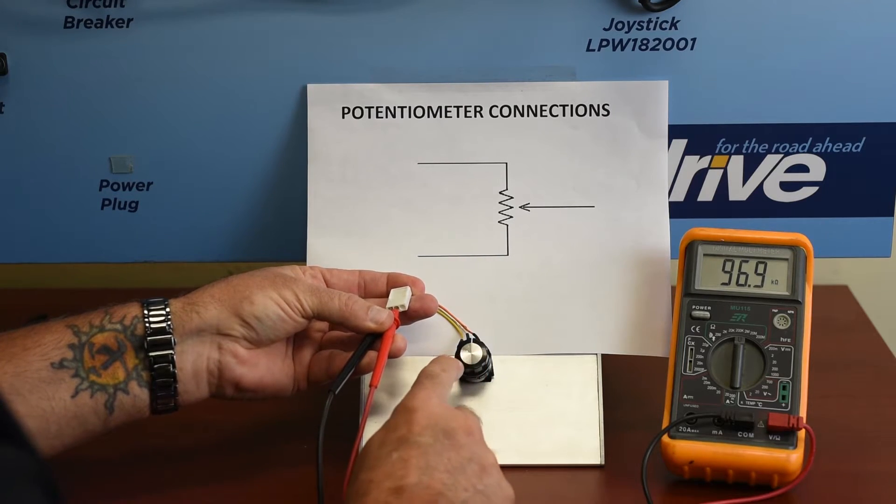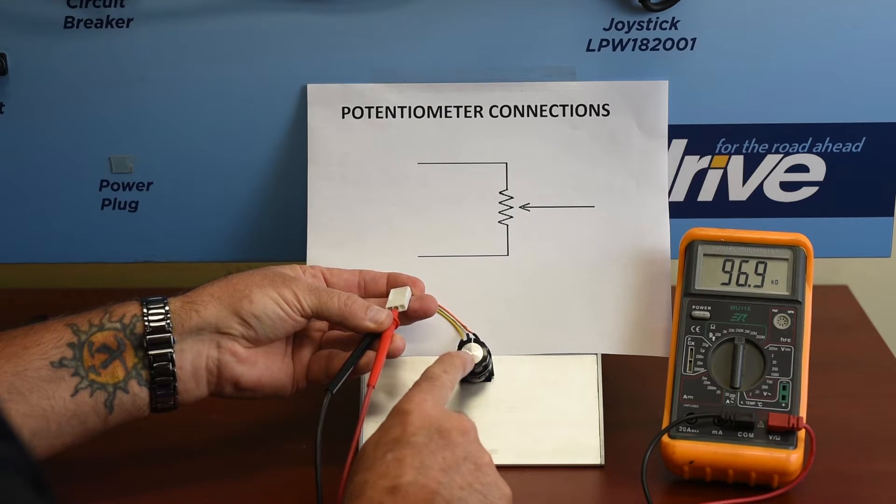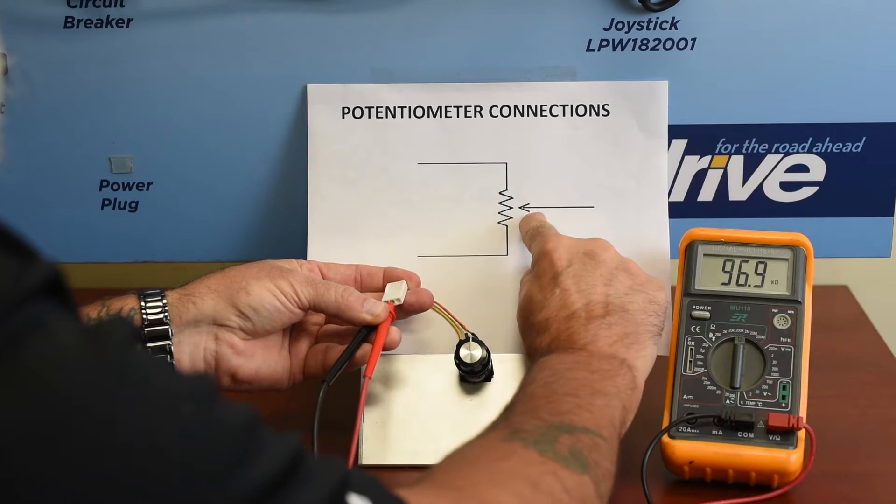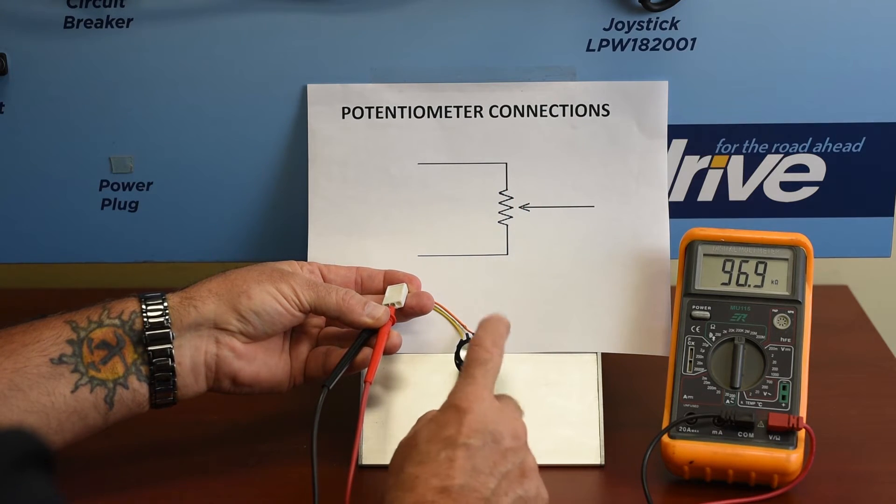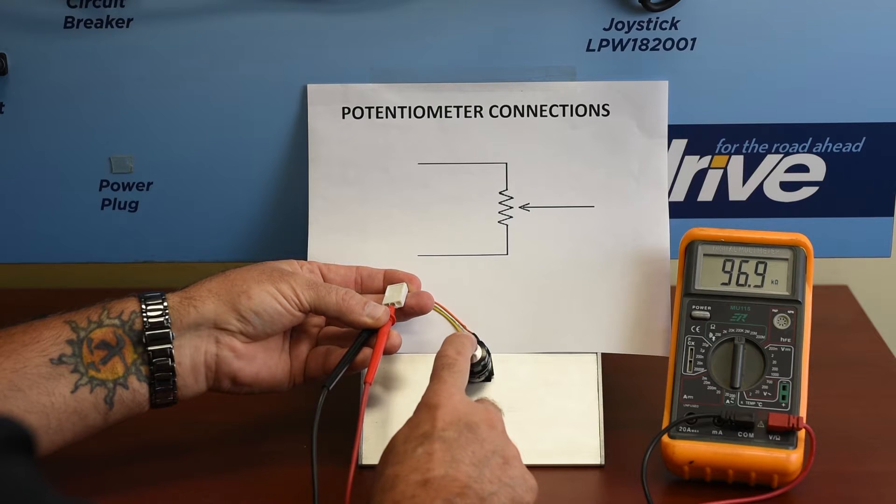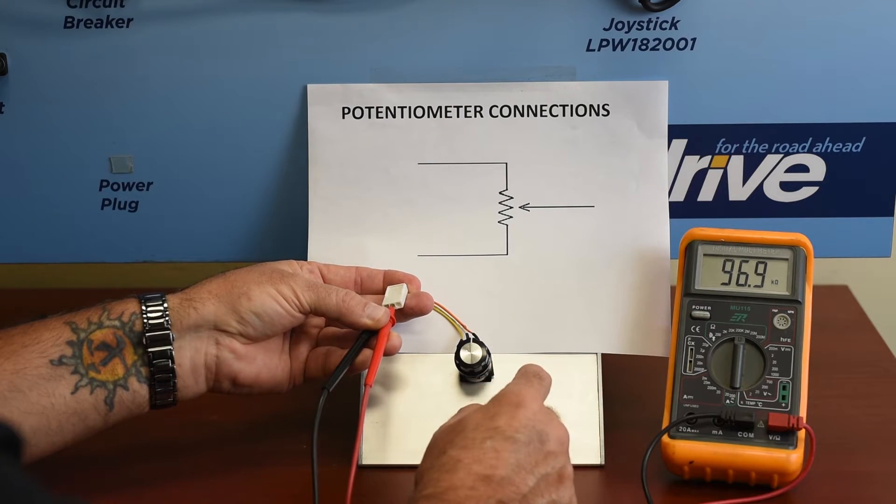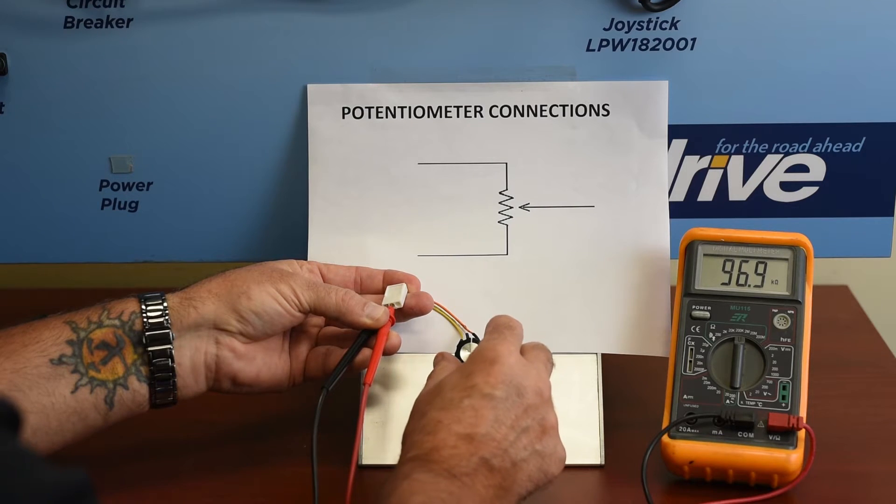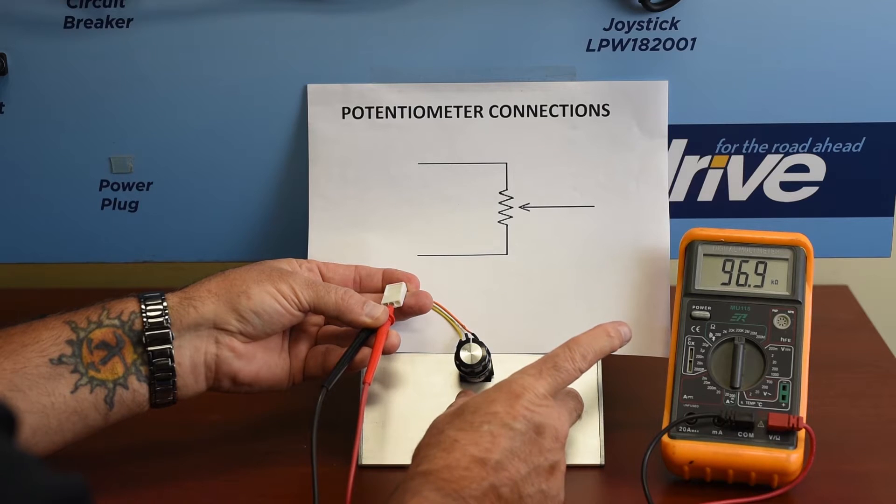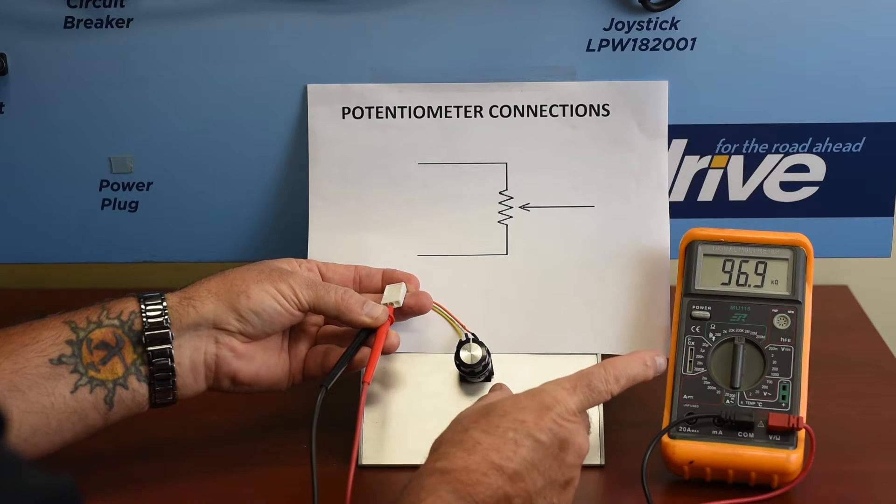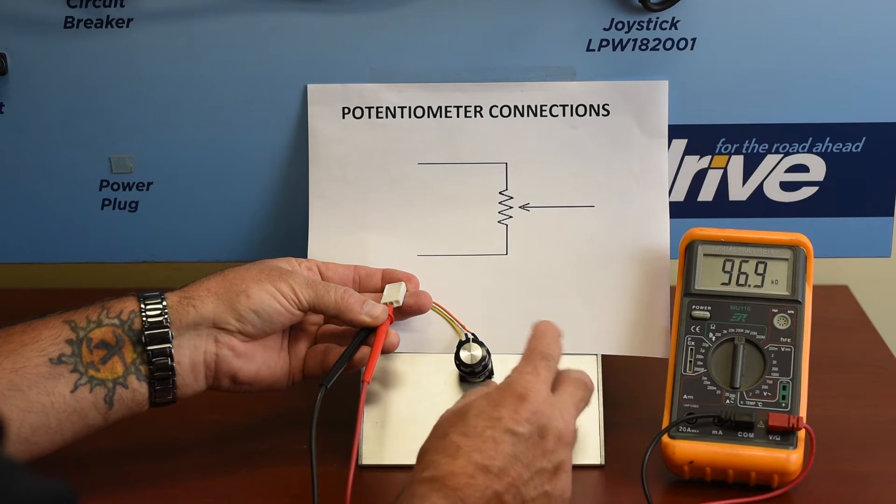And now what we're going to do is slowly turn the knob on the pot and move the wiper in both directions to make sure that it swings smoothly. Normally, the resistance in this case is going to drop to zero because we're at the full swing of the pot in the one direction, but it's going to do it slowly without dropping to zero prematurely, or going to infinity, which would mean that it has an open circuit.